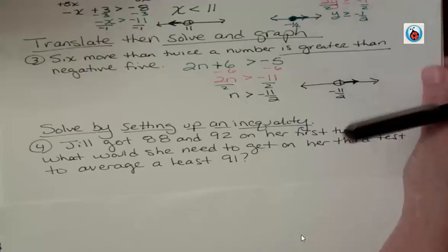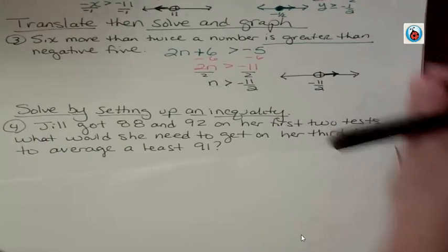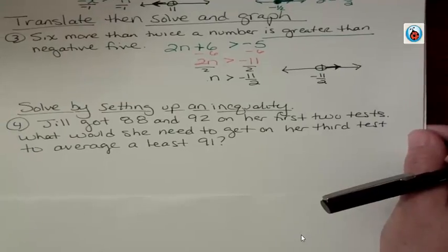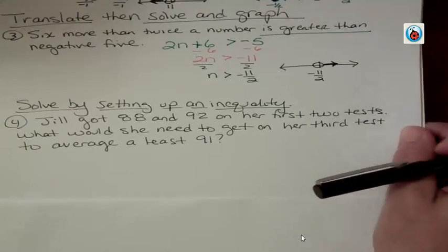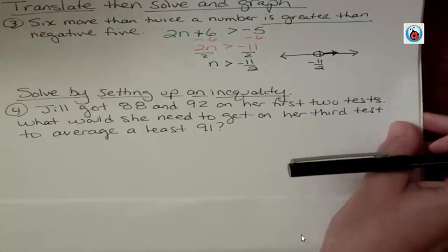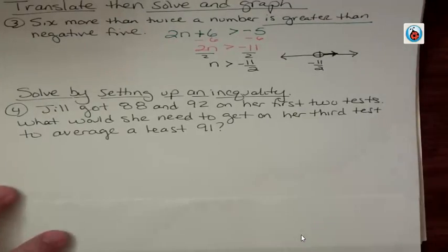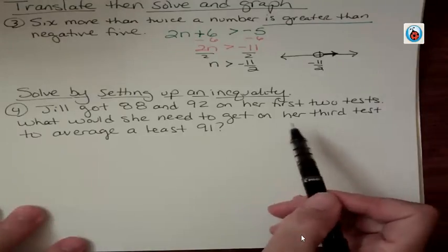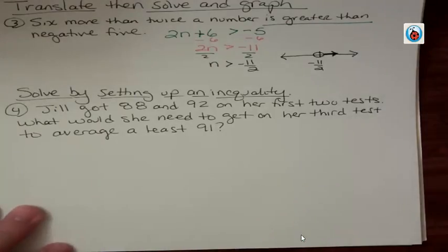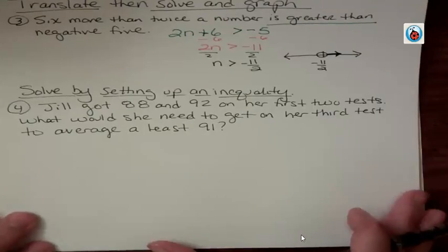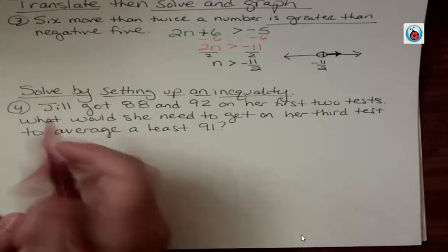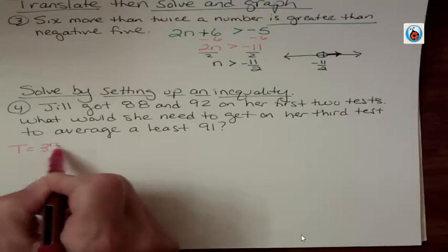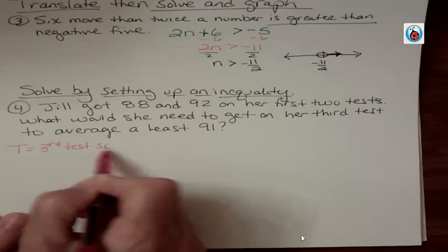Jill got 88 and 92 on her first 2 tests. What would she need to get on her 3rd test to average at least 91? Well this calls on your skills on averaging. To find an average you would add up her 3 test scores and then divide by 3. So let's say that her test score T is her 3rd test score.